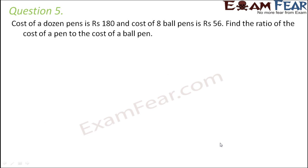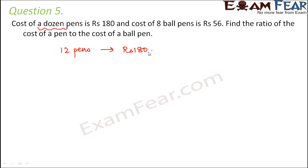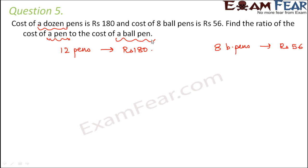Question number 5. The cost of a dozen pens is rupees 180. A dozen means 12, so the cost of 12 pens is rupees 180. The cost of 8 ball pens is rupees 56. We need to find the ratio of the cost of one pen to the cost of one ball pen.